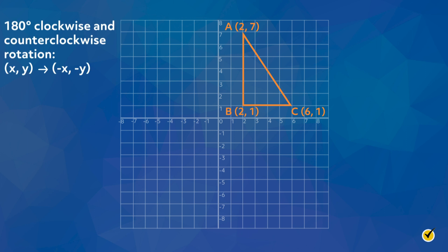Let's rotate triangle ABC 180 degrees about the origin counterclockwise. Although rotating a figure 180 degrees clockwise and 180 degrees counterclockwise uses the same rule, which is (x, y) becomes (-x, -y), where the coordinates of the vertices of the rotated triangle are the coordinates of the original triangle with the opposite sign. Let's apply the rule to the vertices to create the new triangle A', B', C'.